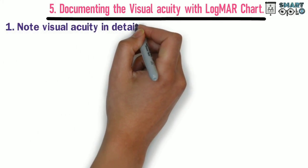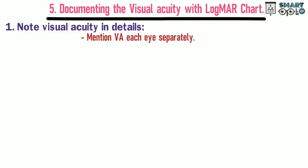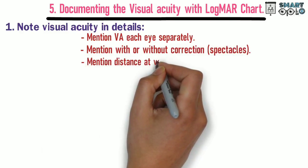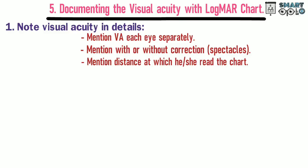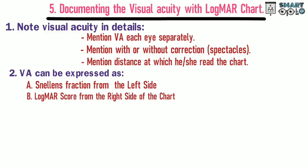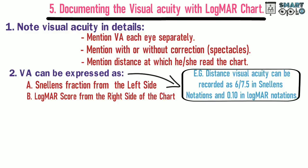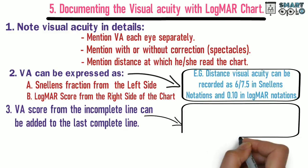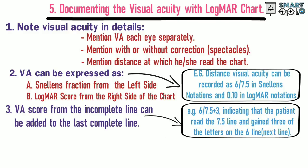Documenting the visual acuity with the LogMAR chart: note visual acuity in detail, mention visual acuity for each eye separately, and mention whether it is with or without correction. Also mention the distance at which they read the chart. Visual acuity can be expressed as Snellen's fraction from the left side and LogMAR score from the right side. For example, distance visual acuity can be recorded as 6/7.5 in Snellen's notation and 0.10 in LogMAR notation.